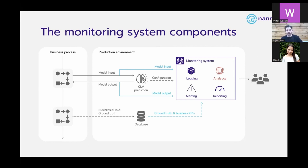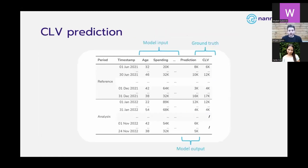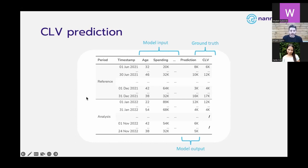For the demo, we're going to zoom into the analytics part, which is done by the open source NanML library. For the customer lifetime value prediction use case, if we look at which data we capture over time: we have the reference data — ideally the test set — where we collect features, predictions, and ground truth, because this is historical data used to test machine learning models. At some point we deploy the model and enter the analysis period — the time the model spends in production — where we gather the same information, but the ground truth is not going to be available for all instances.